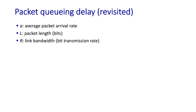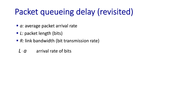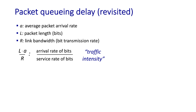Having taken a deeper dive into propagation delay, let's take a closer look at queuing delay — both qualitatively and quantitatively. Let's define A as the average packet arrival rate and L as the length of a packet, so L times A is the arrival rate of bits to that link. R is the link bandwidth, that is the transmission rate of bits. If we take the ratio of these two quantities, the arrival rate of bits divided by the transmission rate of bits, we get a quantity known as the traffic intensity.